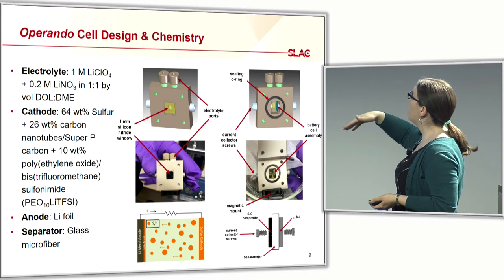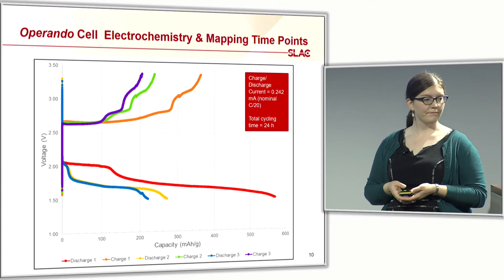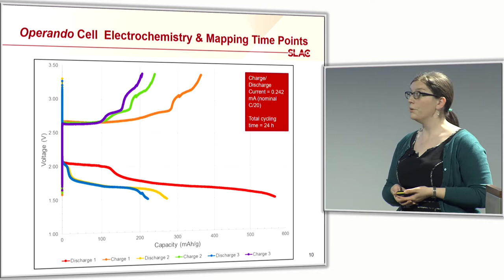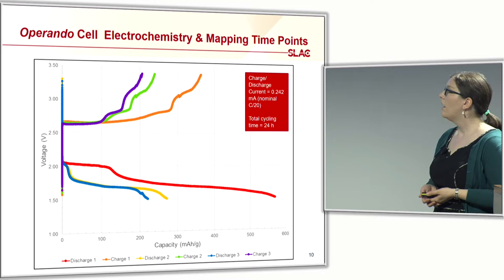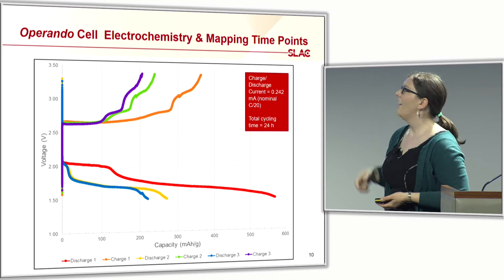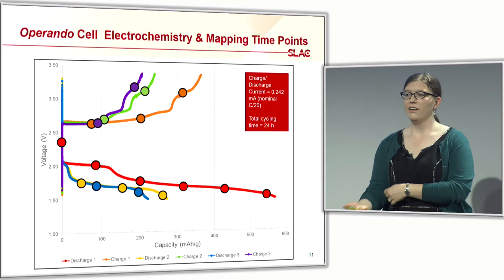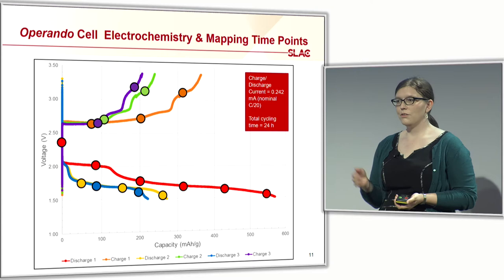The cell is assembled and then the electrolyte is added after the fact. This is an example of the electrochemistry for the maps I'm going to show you. I was able to get three discharge-charge cycles, shown in rainbow order — red, orange, yellow, green, blue, purple — and I took time-point maps approximately every hour and a half. Taking a map is not instantaneous, so there is a bit of a time gradient in the maps.